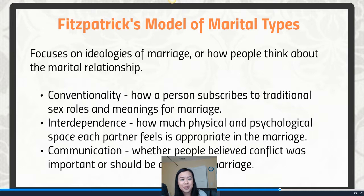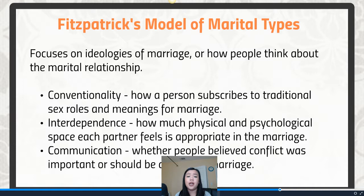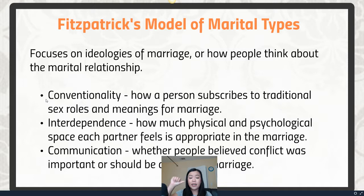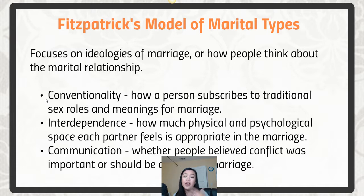That leads us to Fitzpatrick's model of marital types. Researcher Marianne Fitzpatrick in the 1980s tried to understand different types of families based on their communication practices. She analyzed how people think about and describe their marriage relationship to predict the type of relationship they have. She measured three things: conventionality, interdependence, and communication, then created a survey based on those results. Let's go over these factors first and then the different types of marriages.